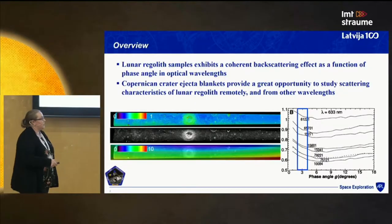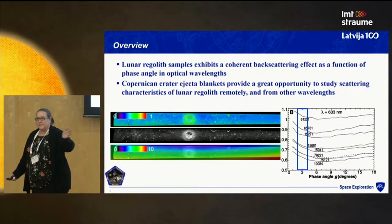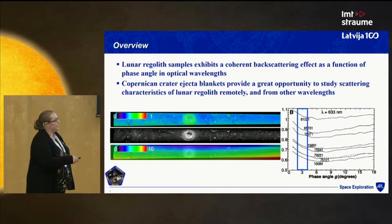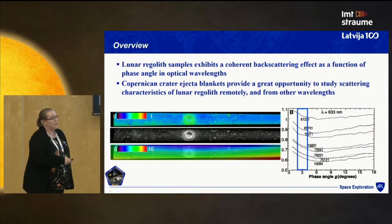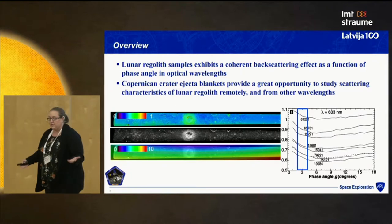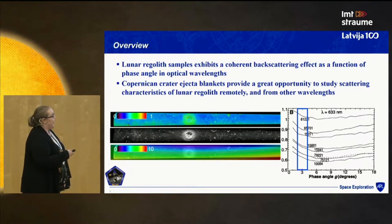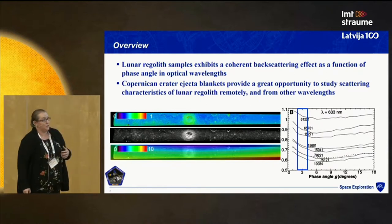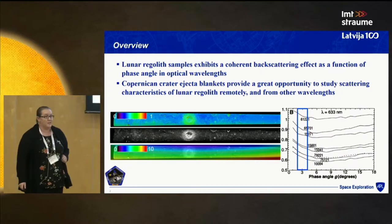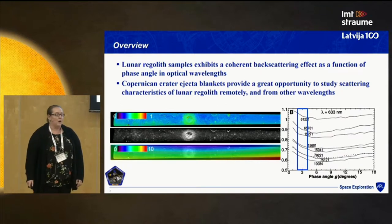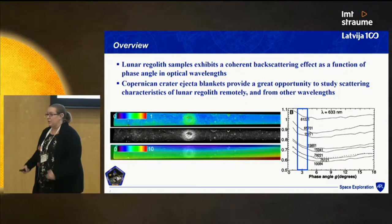So just to start with, we know that lunar regolith, when you look at it in optical wavelengths, behaves in a predictable way. As you go across the phase angle that you're observing it, you see the characteristic response, where at low phase angles you get this upturn, which is the opposition effect, and you see higher values of the light scattered back towards you. We know that this happens in optical wavelengths for samples here in the lab. Our question was, can we observe this on the moon, and can we observe it using other wavelengths?